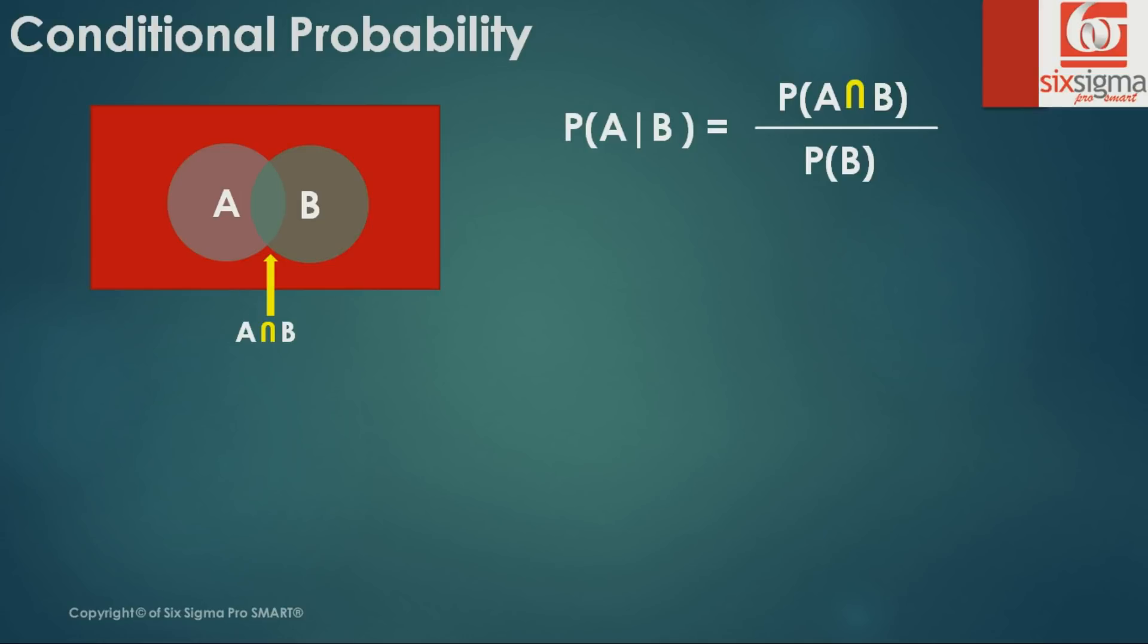If we were asked: what is the conditional probability of A given B, which is the probability of occurrence of A given that B has already occurred? To simplify this, whenever you're dealing with conditional probability, assume that the entire sample space has shrunk to the event which has already occurred. So you can write the probability of A given B as probability of A intersection B divided by probability of B.